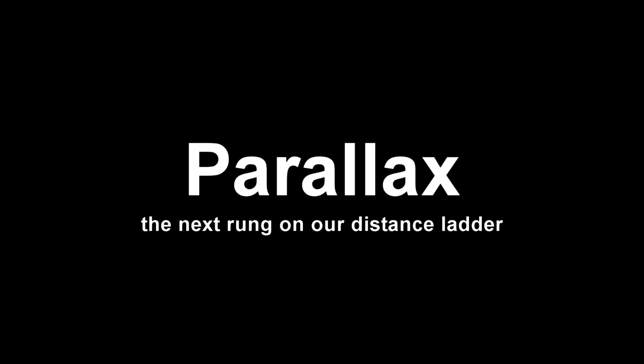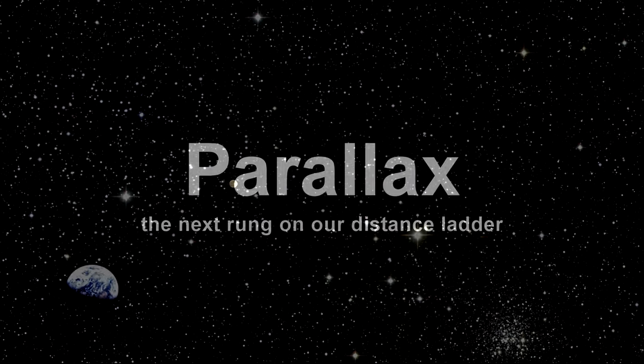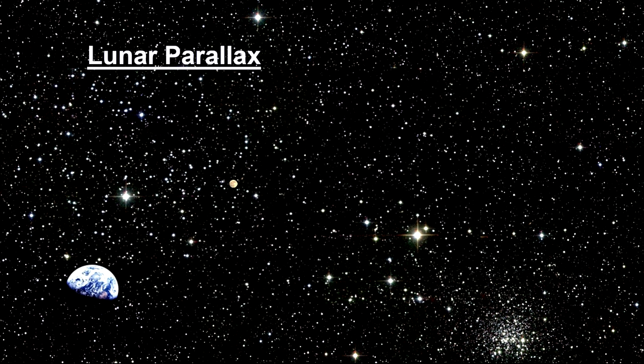In 1752, the French astronomers Lalande and Lacalle used the parallax method to calculate the distance to the Moon. Here's how it works.